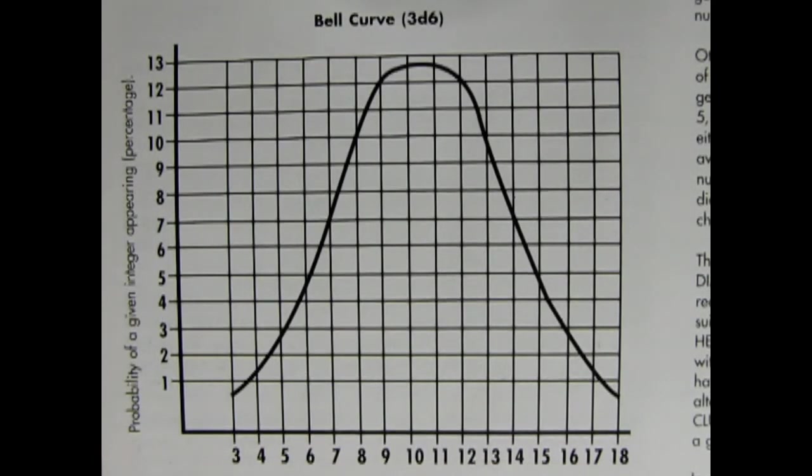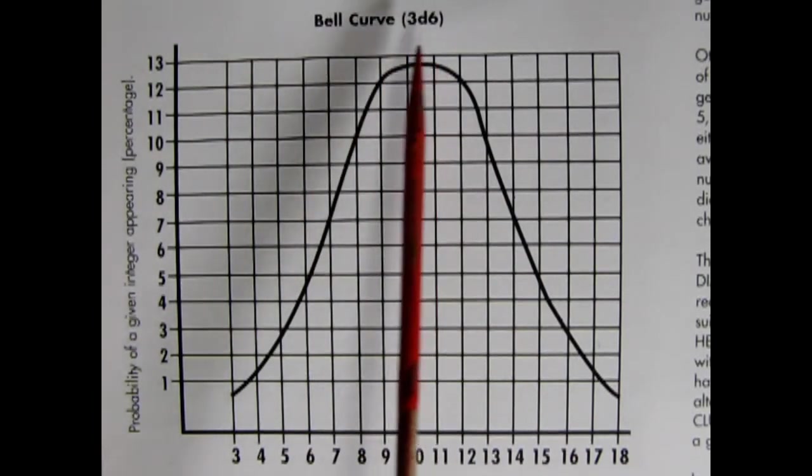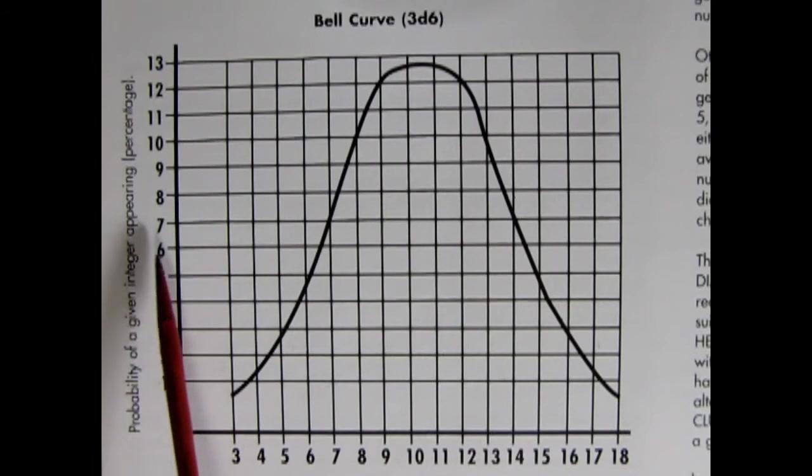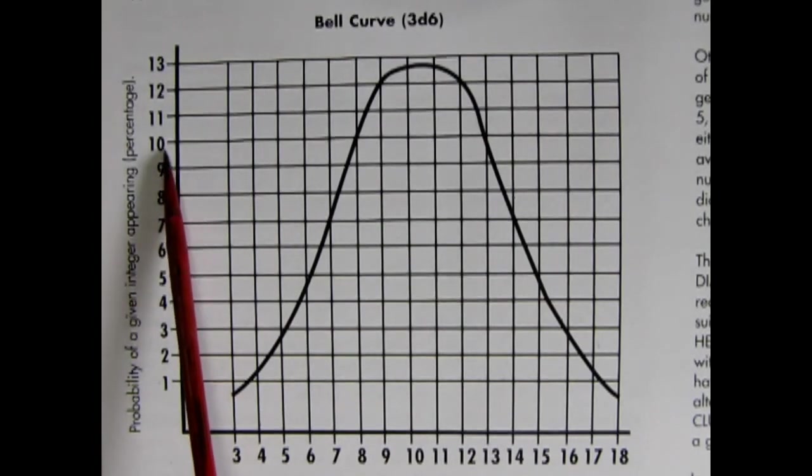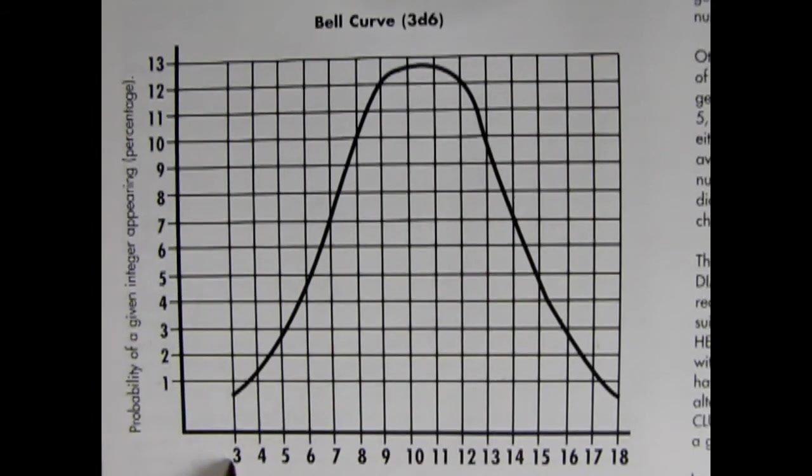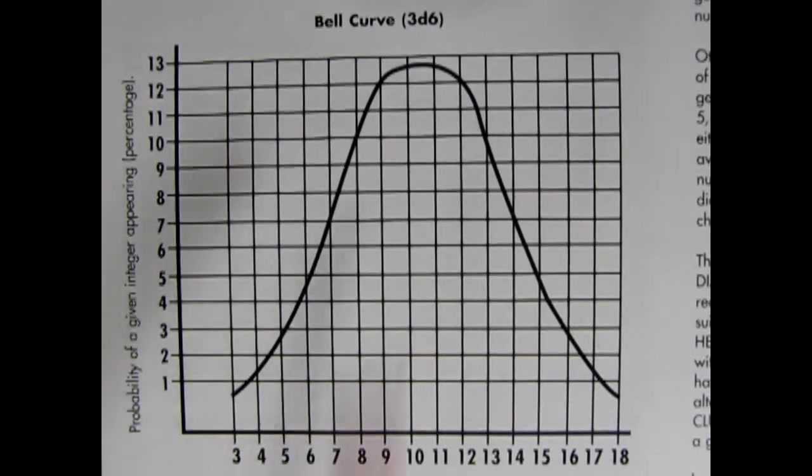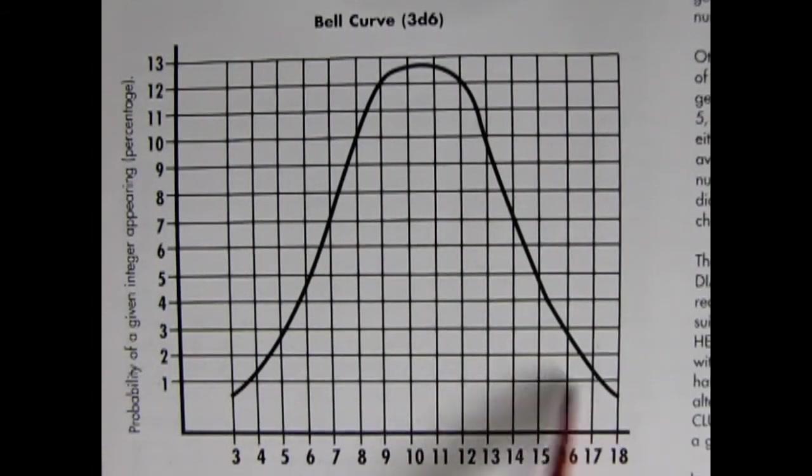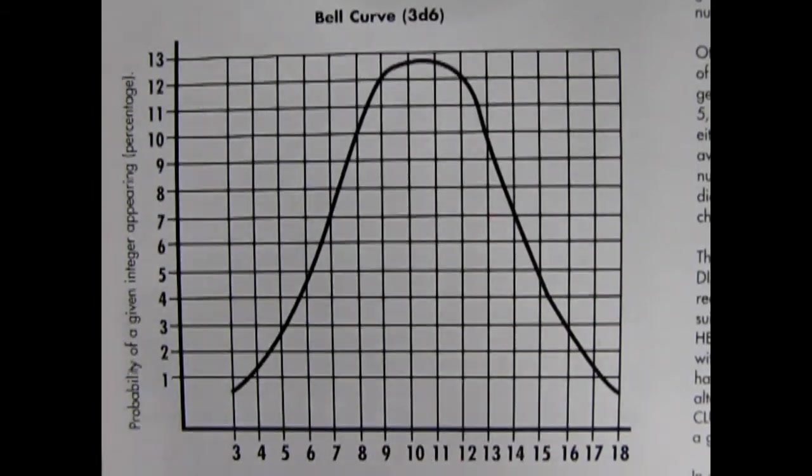Bell distribution. When used to delineate the probability of certain numbers appearing develops a curved line. Bell curve using three d six, three six sided dice. Probability of a given integer appearing as a percentage. So from one to thirteen and then from three to eighteen.